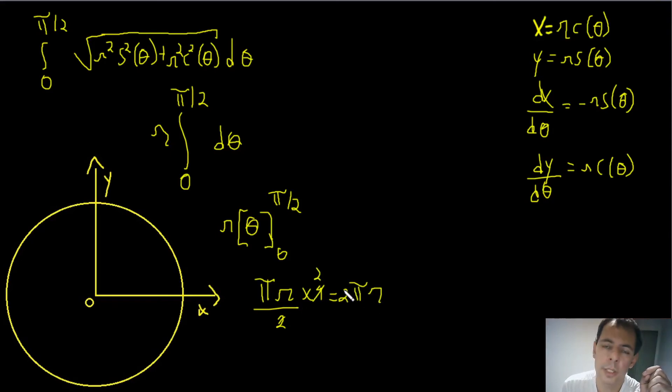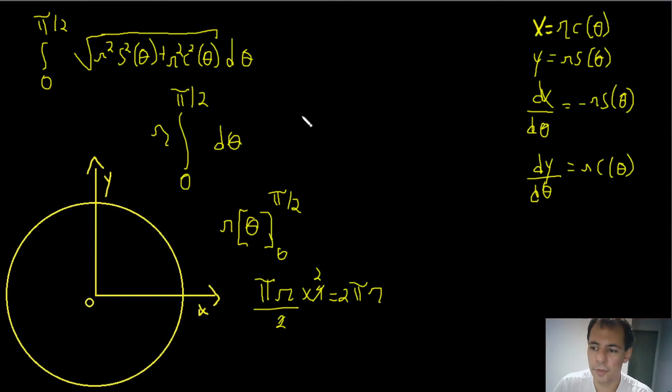And you're left with 2πR, which is the circumference of the circle. That's it — it's a pretty short video.